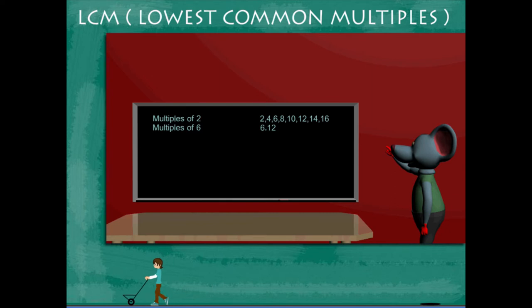He explains that the common multiples are 6 and 12, because 6 and 12 are multiples of two and these are also multiples of six.